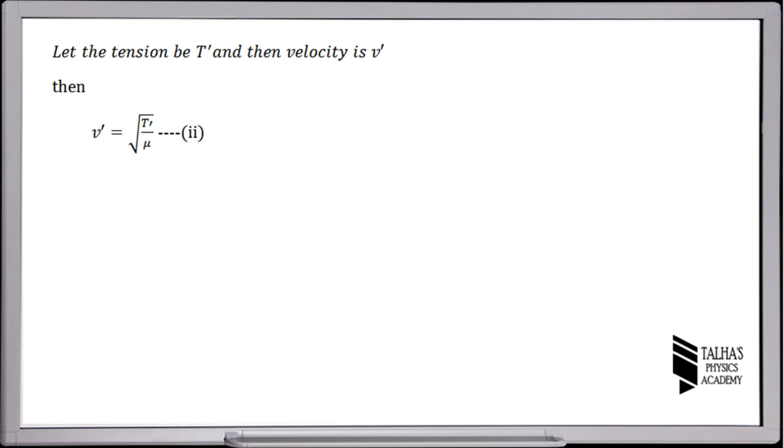Let the tension be t prime and then the velocity is v prime. Then v prime is equal to under root t prime over mu. Let us say this is our equation number 2.